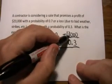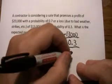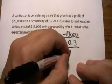And negative 13,000 times 0.3, again if you do it on your calculator, comes out to be negative 3,900.